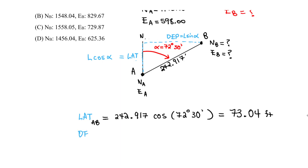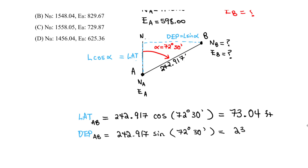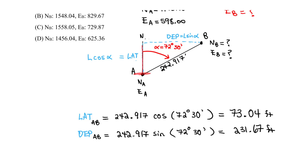The departure from A to B is 242.917 × sin(72°30'), giving positive 231.67 feet. Both values are positive because we go up (north) and to the right (east) from A to B. Be careful with the signs — in this case both latitude and departure are positive.